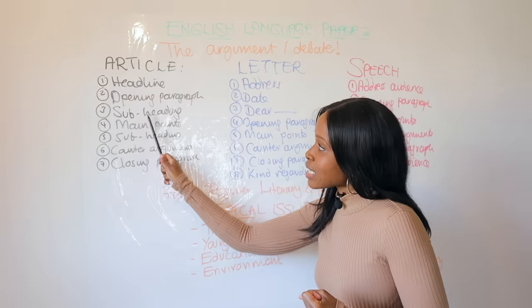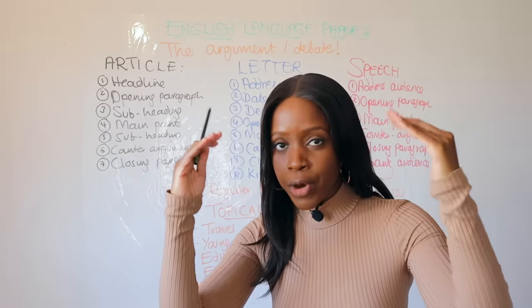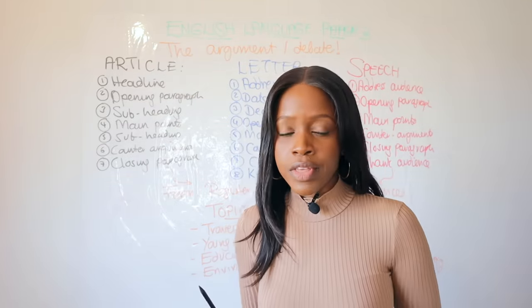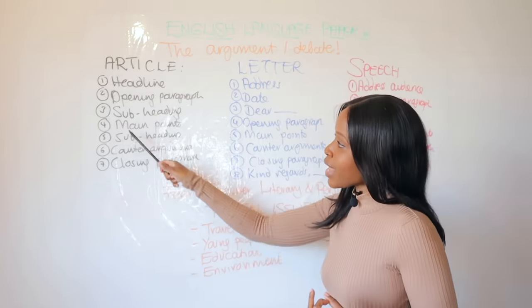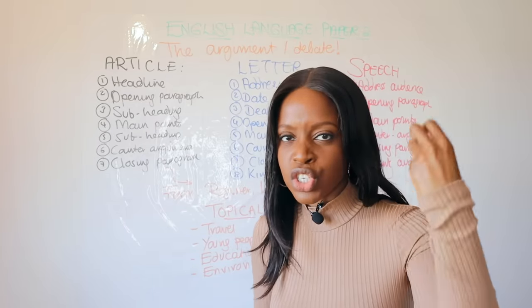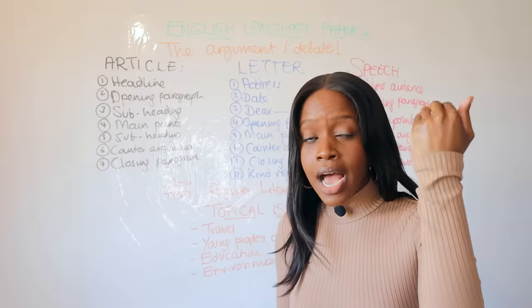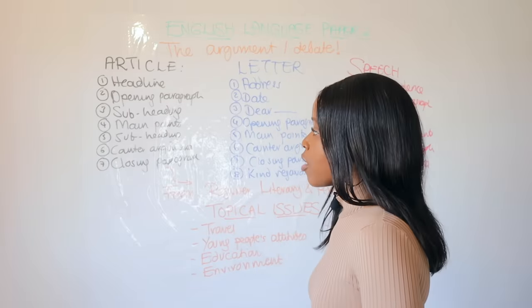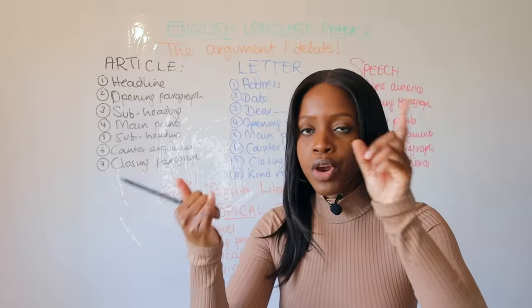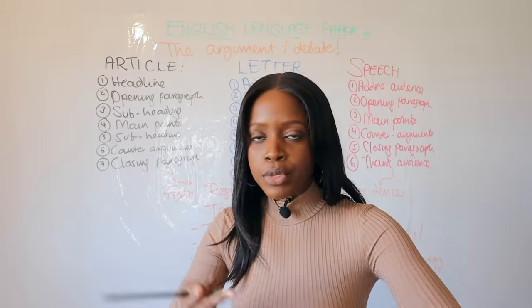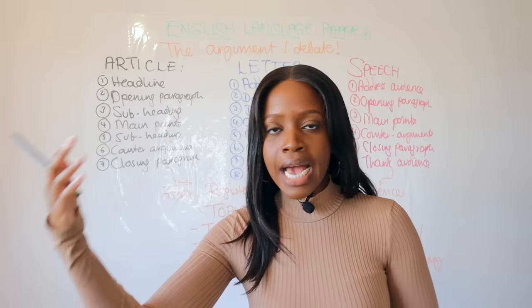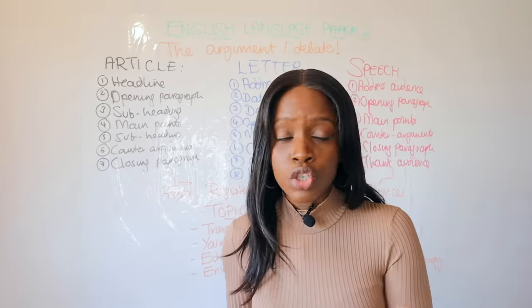Step three is a subheading — a little bit like the headline — to break up the text and make it easy for your reader's eyes to glide over the article. It's short and brief, just hinting at the next line of argument. Then in step four, have at least two to three paragraphs outlining your main points: why you think you're right, adding anecdotes, statistics, direct address, and rhetorical questions to make your article engaging.